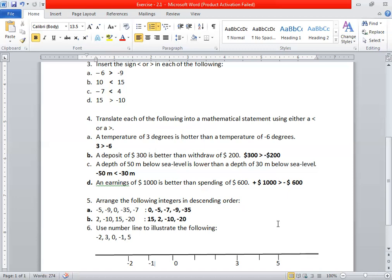First part: minus 5, minus 9, 0, minus 35, minus 7. Start from the highest number. Zero comes first because it's the only integer which is neither positive nor negative. Then: 0, minus 5, minus 7, minus 9, minus 35.